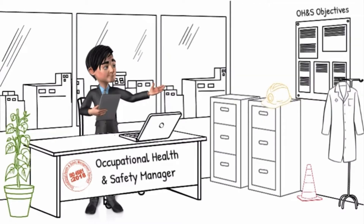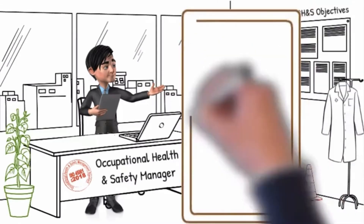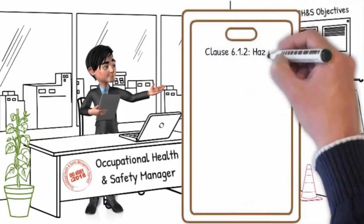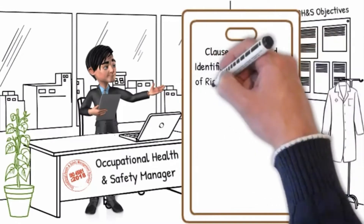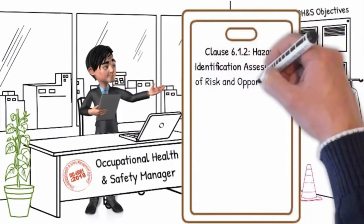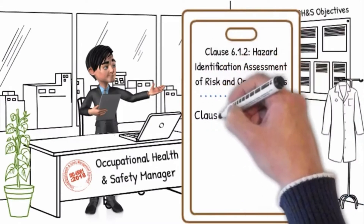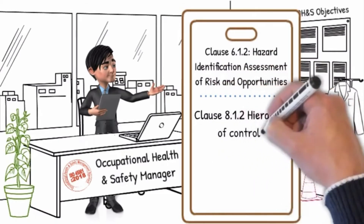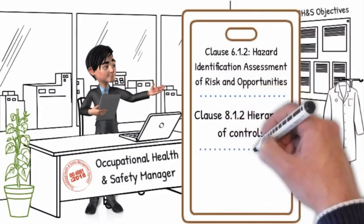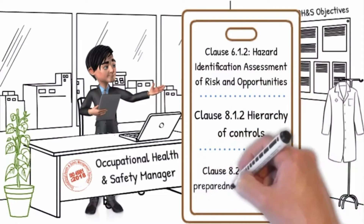We will now review the following related ISO 45001 clauses: Clause 6.1.2 Hazard Identification Assessment of Risk and Opportunities, Clause 8.1.2 Hierarchy of Controls, and Clause 8.2 Emergency Preparedness and Response.